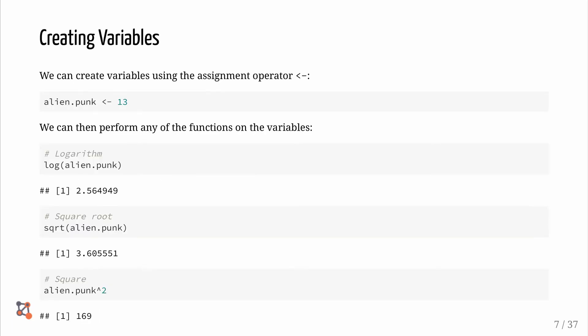Variables are created using the assignment operator. This consists of the less than sign and the minus sign. We can then perform any of the functions on the variables. We can calculate logarithms, squares, and square roots.